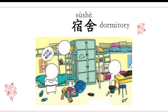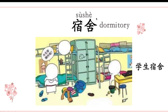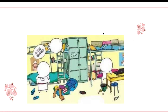宿舍 is typically for students or soldiers. So we can say 学生宿舍. The character shape of 宿 looks like a ceiling, like a small house. And inside the dormitory — 在宿舍里 — we have a roommate.